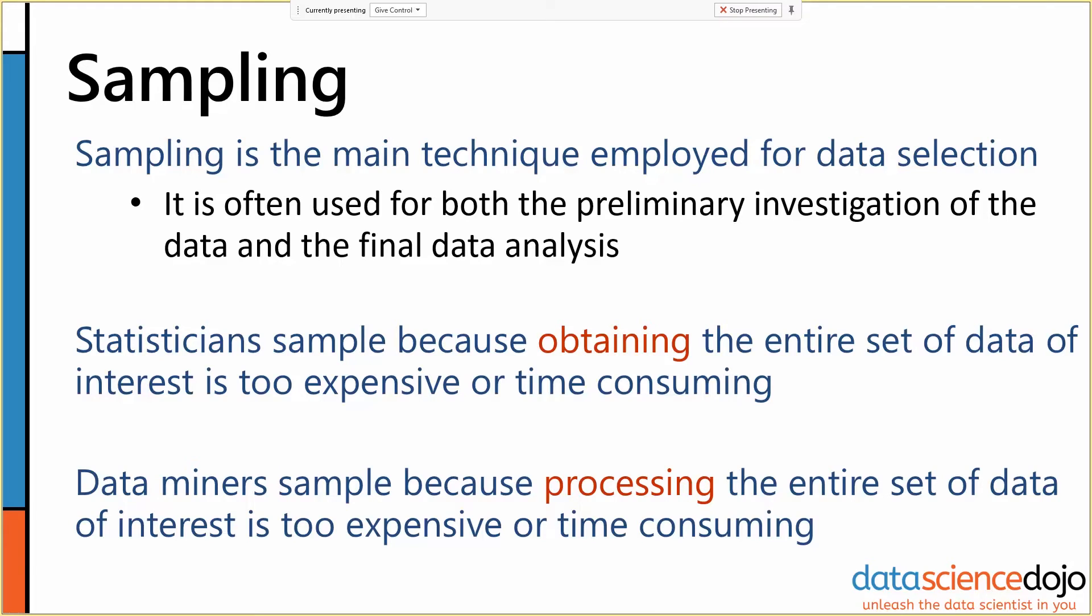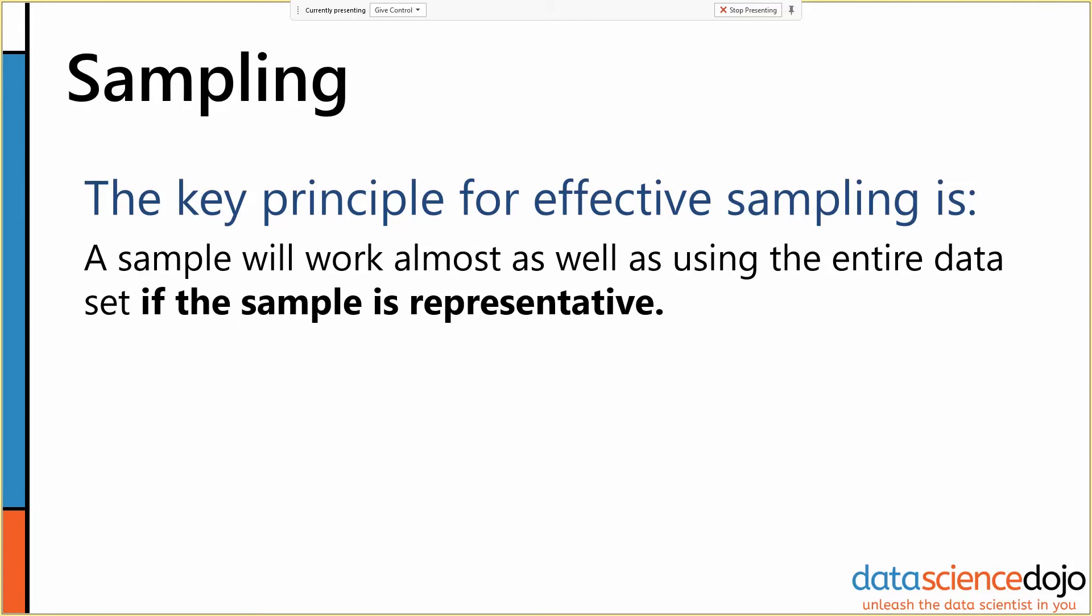When you're sampling, there is one thing more than anything else that you have to keep in mind, which is representation. The key principle when you're sampling is that the sample will work almost as well as using the entire data set if and only if the sample is representative.